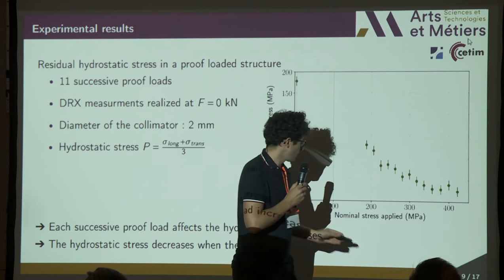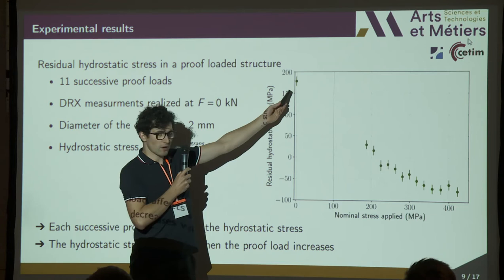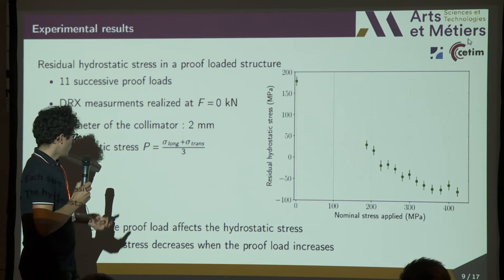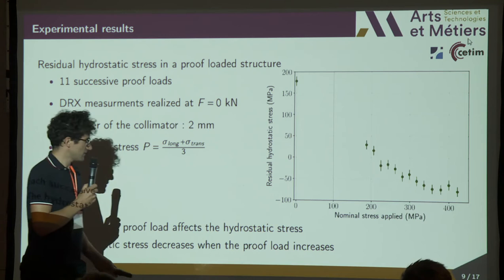We can see that at the initial state, before applying a proof load, we have tensile residual stresses, which correspond to the welding process residual stresses. Then, when we apply a proof load, we reduce the residual stresses and obtain compressive residual stresses for the greater proof loads.